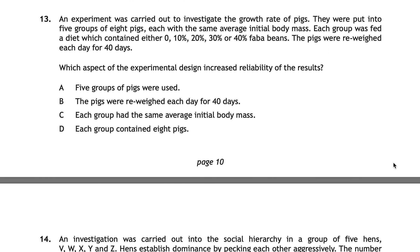For question thirteen, an experiment investigated growth rate in pigs divided into five groups of eight, each with the same average initial body mass, fed diets containing 0, 10%, 20%, 30%, or 40% faba beans, and re-weighed daily for 40 days. The correct answer is D — each group contained eight pigs. Because each group had eight pigs, an average could be taken from each group rather than relying on a single pig's result. A larger data set and obtaining an average increases the reliability of the results.